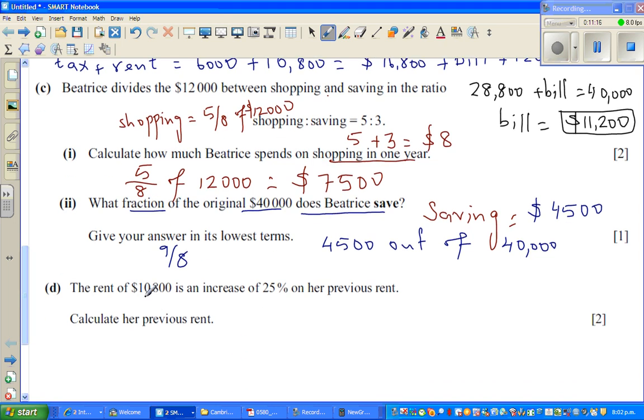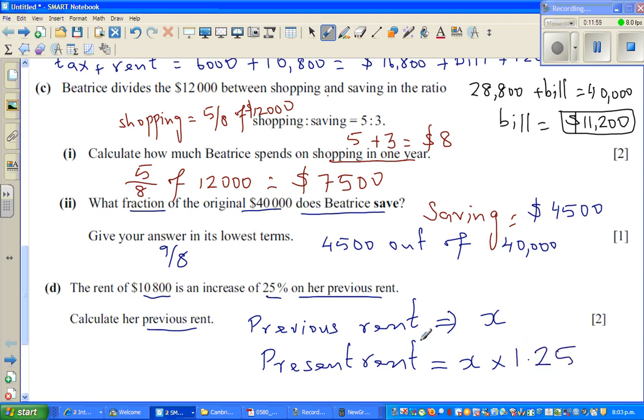The final question. The rent of $10,800 is a 25% increase of the previous rent. So what's the previous rent? We'll use a little algebra here. Let's say the previous rent was X. So the current or present rent is equal to X times 1.25. I'll explain what it means.